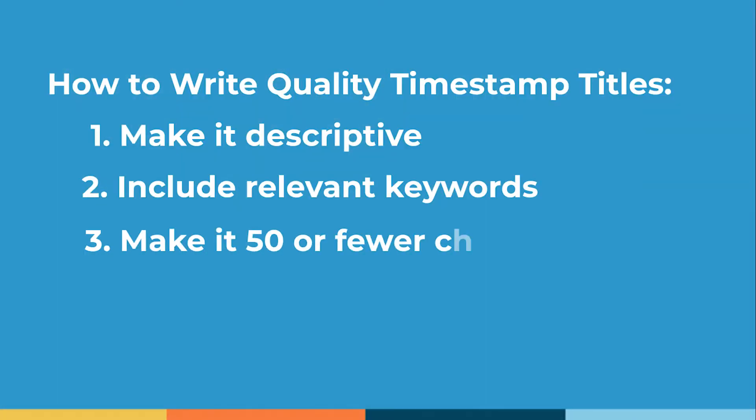And finally, number three: make your timestamp title about 50 characters or less. If you make it longer, it can cause the text to wrap to the next line and look a bit confusing amongst the other chapters.